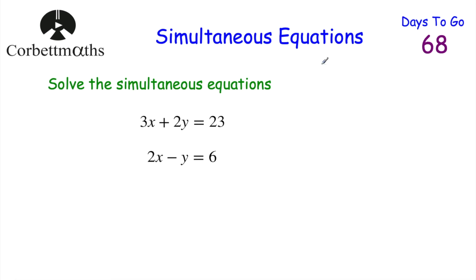Today's topic is simultaneous equations. In this question we've been asked to solve the simultaneous equations 3x plus 2y equals 23 and 2x minus y equals 6. I'm going to go through this question and show you how it's done, and then there's one for you to try. But if you feel comfortable with it, feel free to try this question yourself.